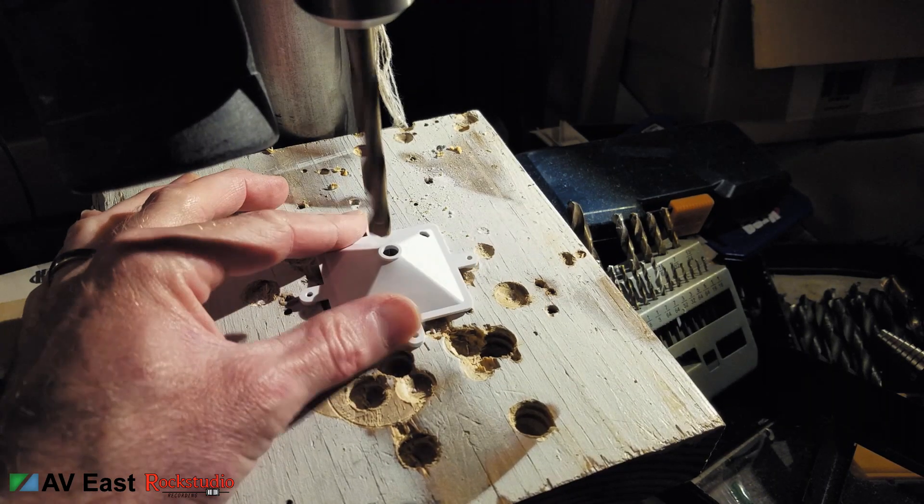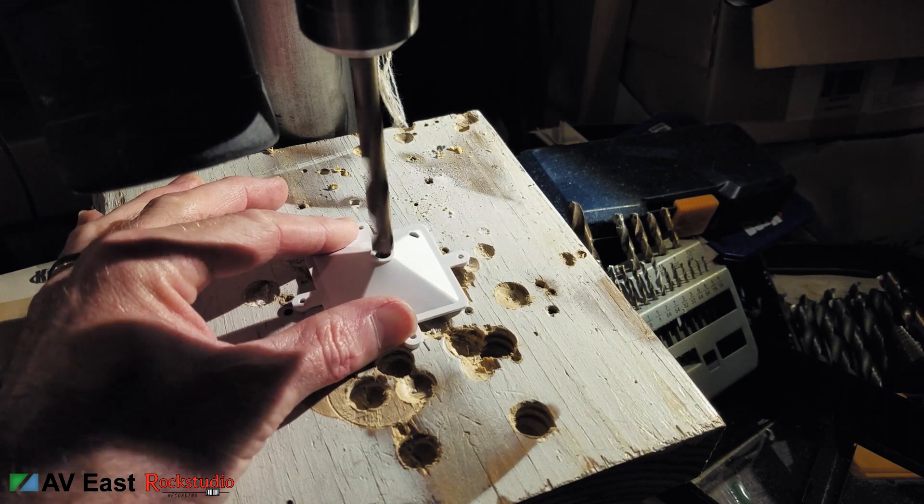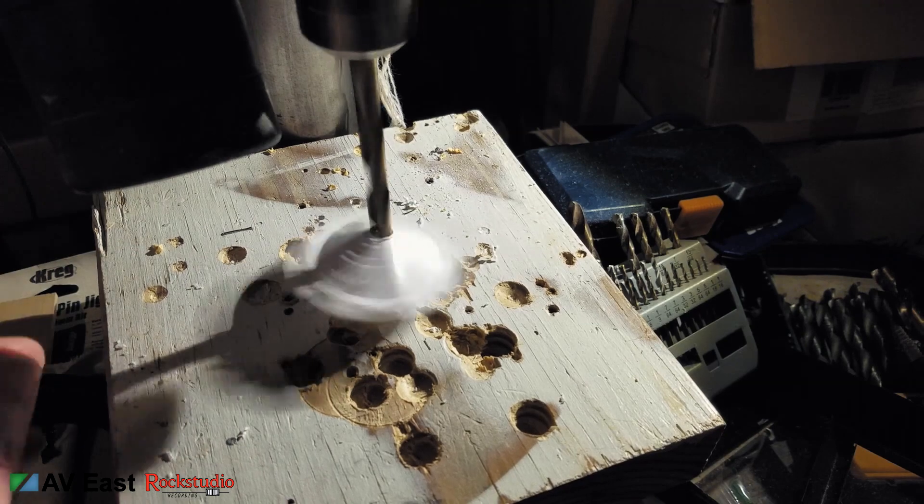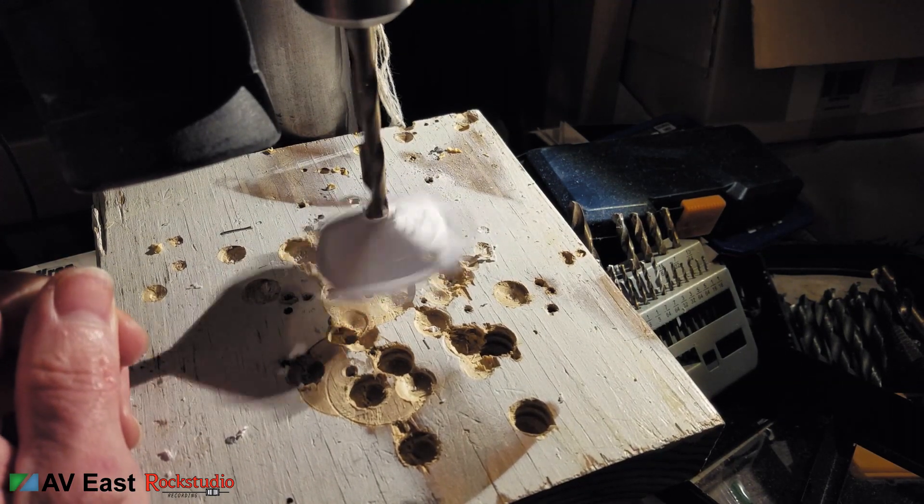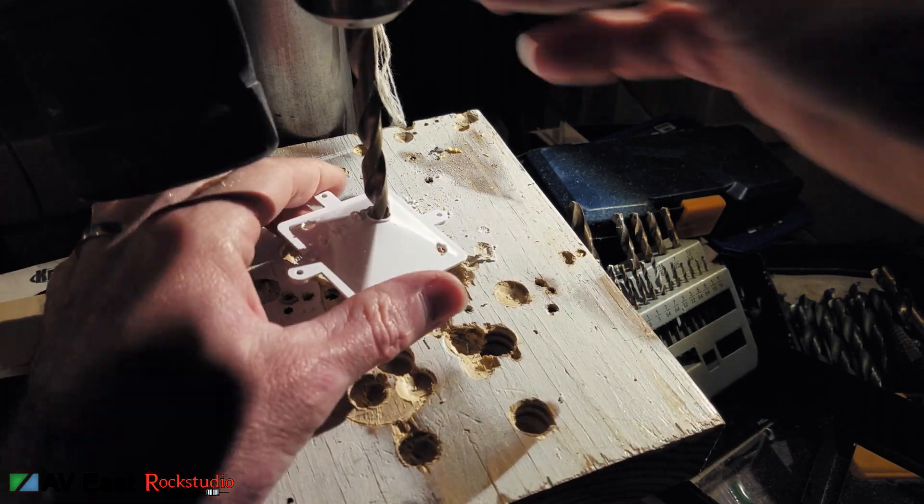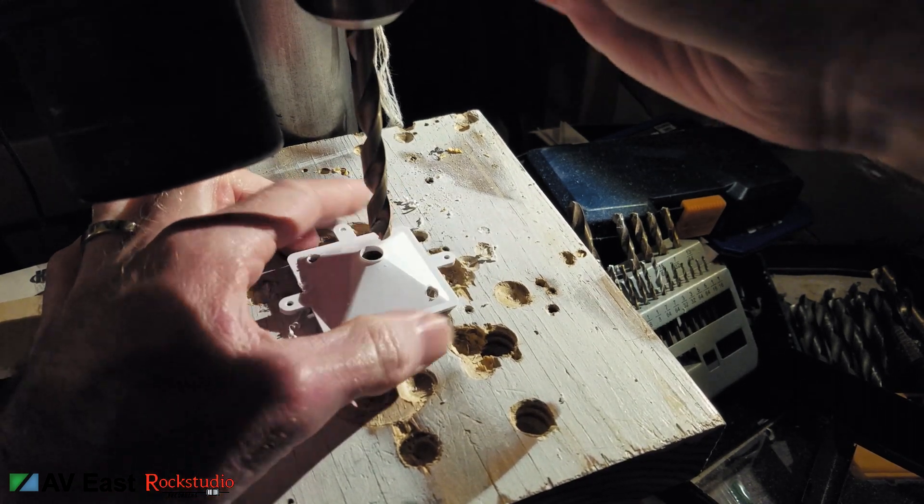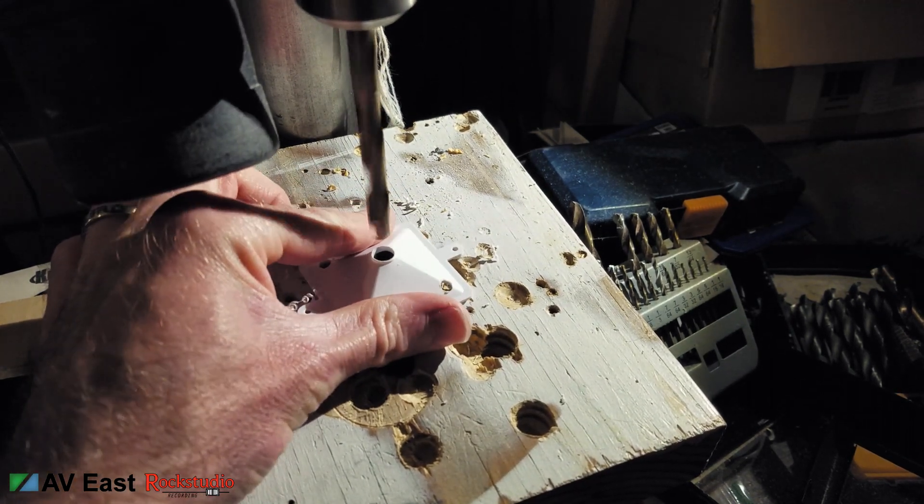I'm going over to the drill press and I'll find the center of this hole and start enlarging it using gradually larger bits. This plastic is really strong and sticky. If you don't hold the part down hard enough the drill can grab it and rip it out of your hands. So make sure to keep your fingers clear and be extra careful when you're doing this kind of process.